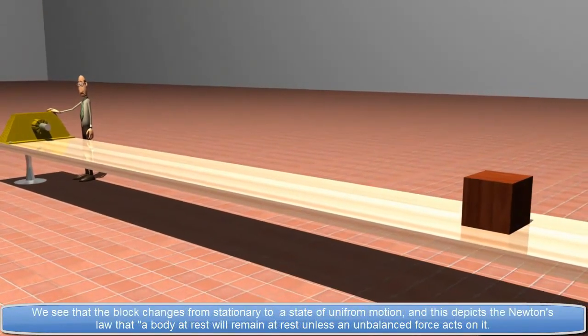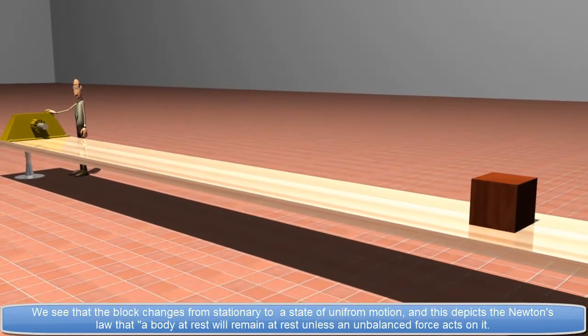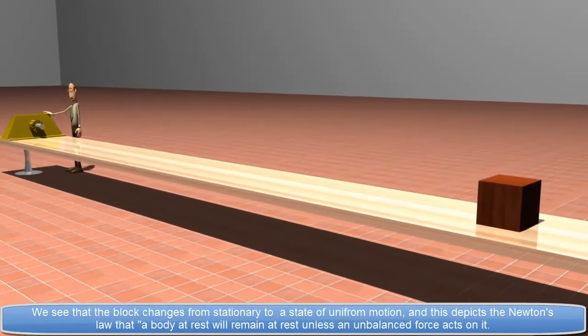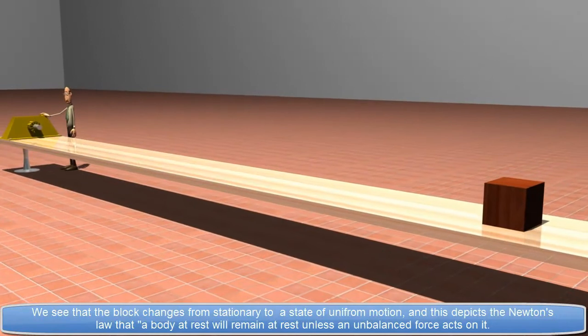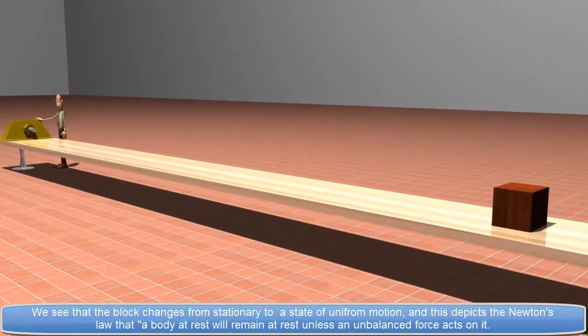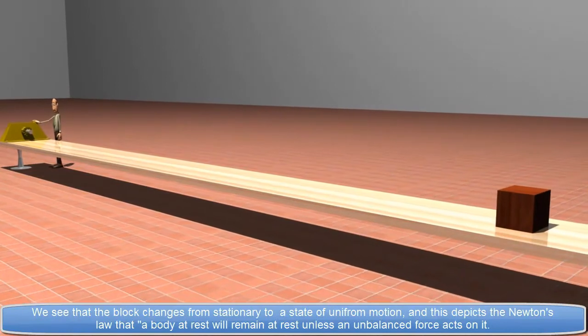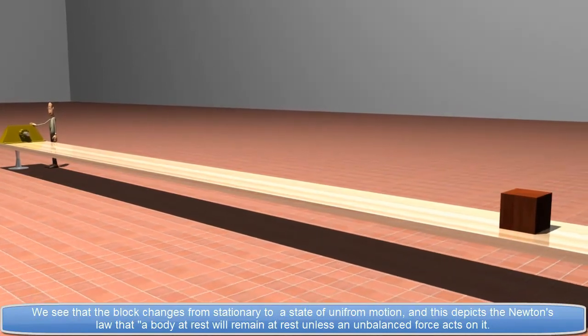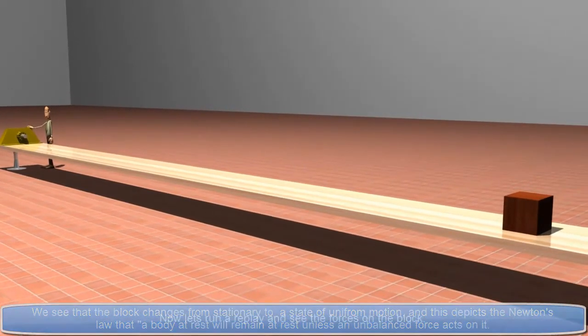We see that the block changes from stationary to a state of uniform motion. And this depicts Newton's law that a body at rest will remain at rest unless an unbalanced force acts on it.